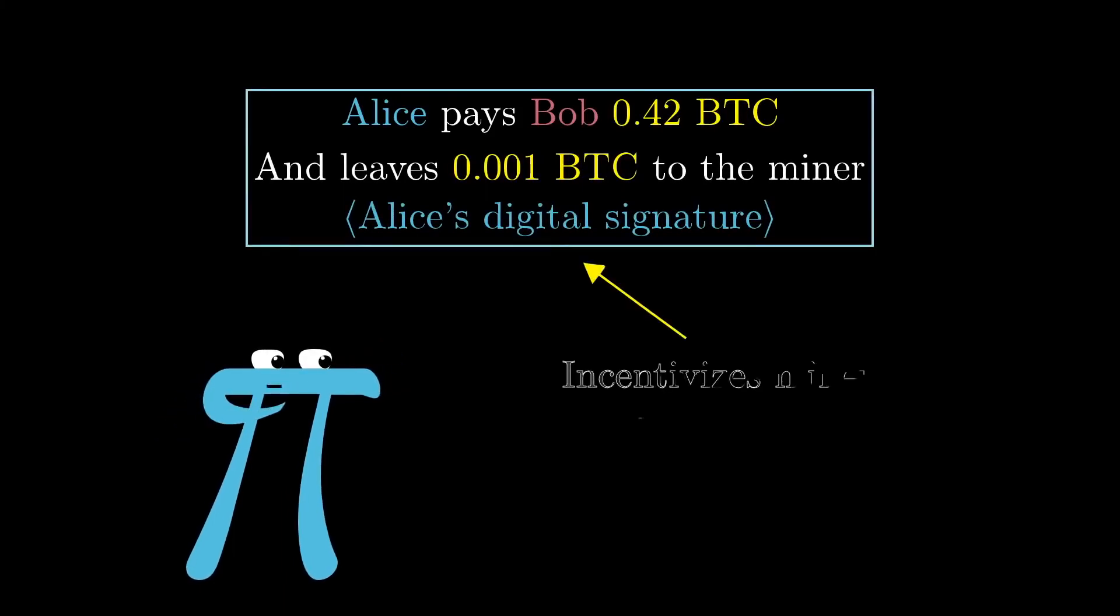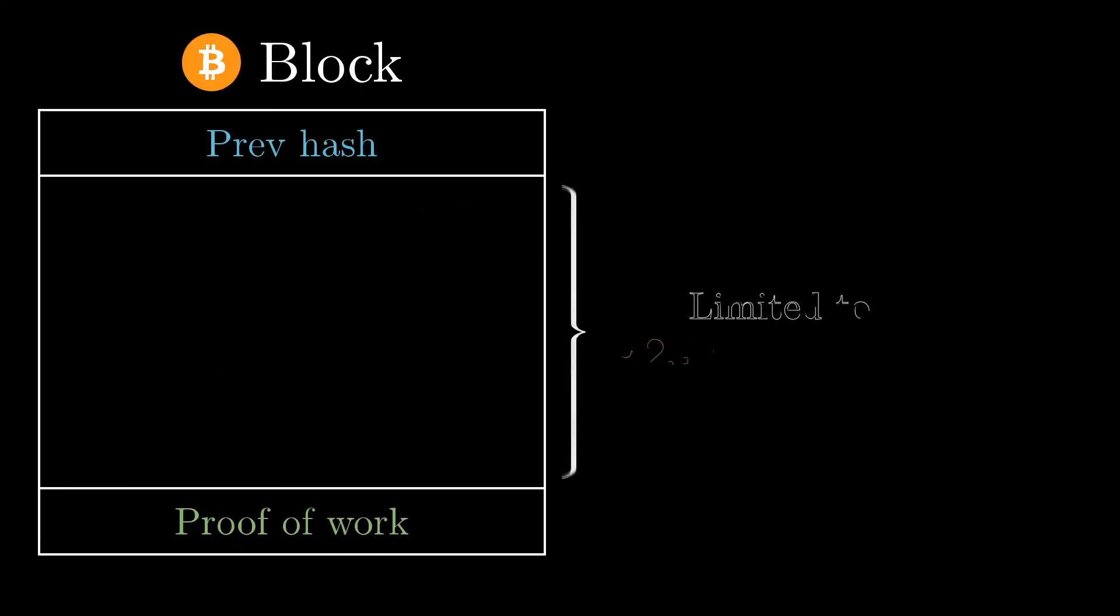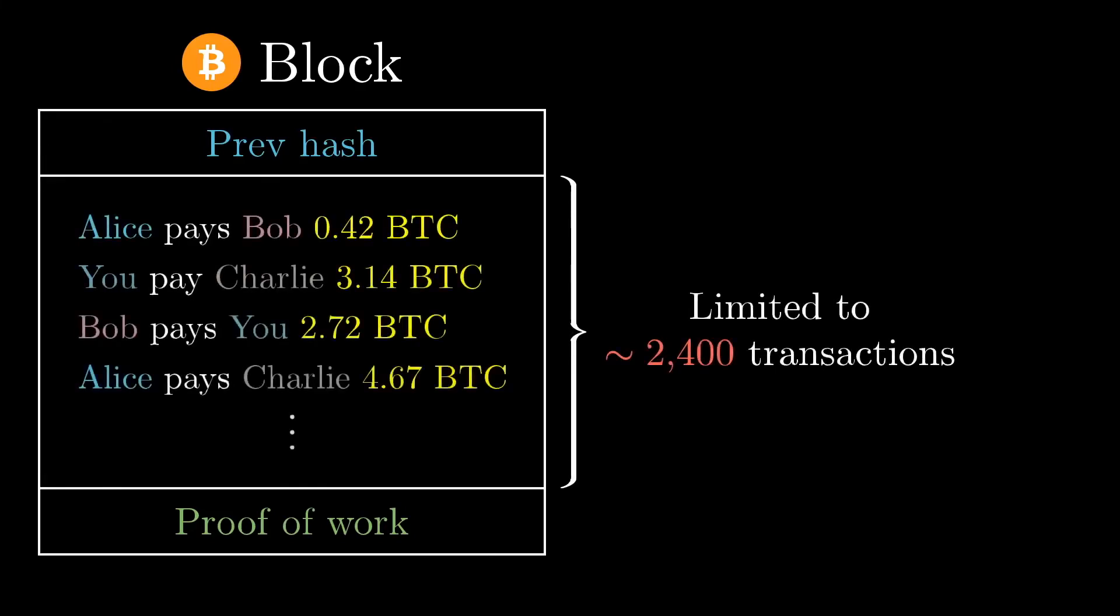The reason you might do that is to incentivize miners to actually include the transaction that you broadcast into the next block. You see, in Bitcoin, each block is limited to about 2,400 transactions, which many critics argue is unnecessarily restrictive.